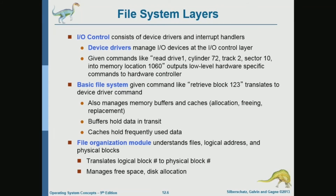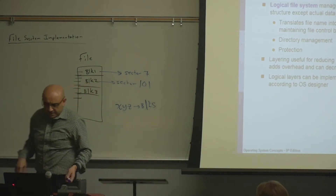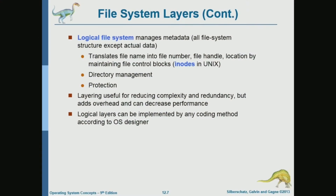The layer on top is the logical file system layer, which is basically the directory level layer. The previous layer was the file level; on top of that you have the directory level, because a directory consists of multiple files. This layer manages directories, maintains the directory structure with an entry and a file control block for each file, and also handles directory management, protection, and file access privileges.